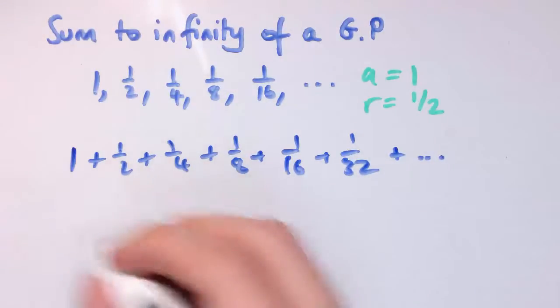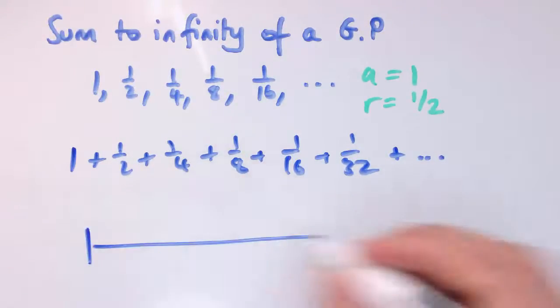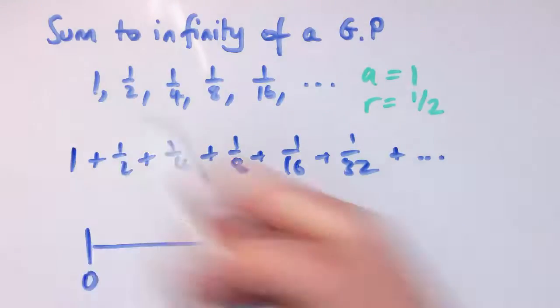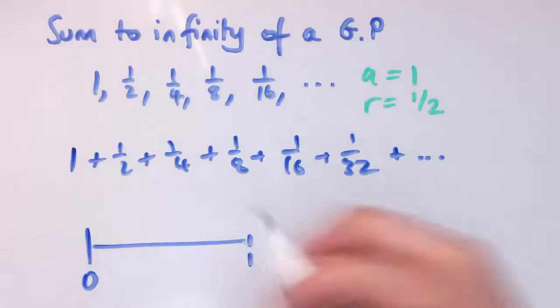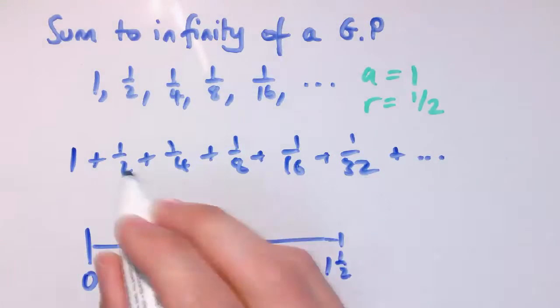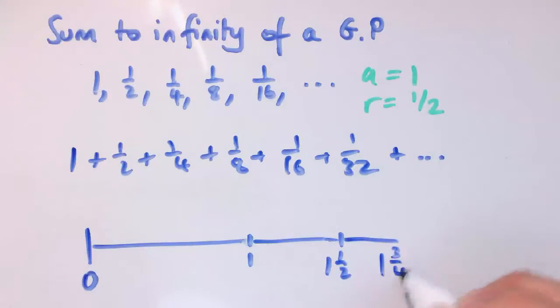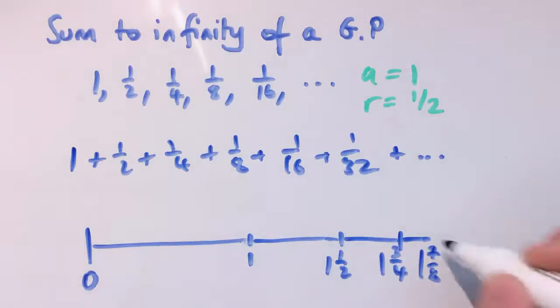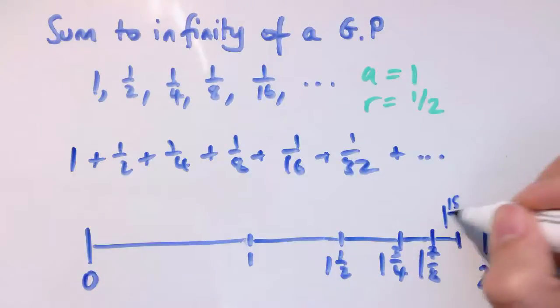If we imagine a number line that starts at zero, I'm going to keep adding these terms on. I start with 1, that takes me to 1. When I do 1 plus a half, I add on another half, and that takes me to 1 and a half. Then I add on a quarter, and I get to 1 and 3 quarters. I add on an eighth, and I get to 1 and 7 eighths. Every time I add on an extra term, I'm adding on a sixteenth, so I'm 1 eighth away from 2, which is somewhere over here.